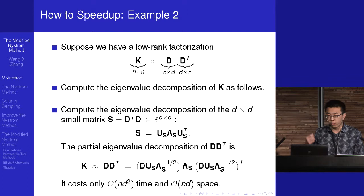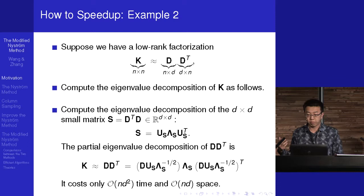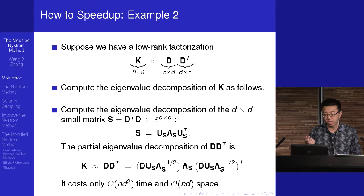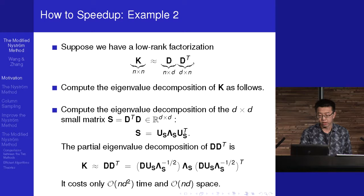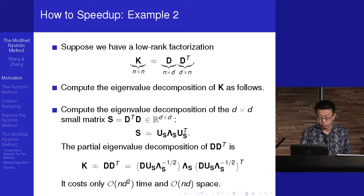With the low-rank factorization at hand, the eigenvalue decomposition can be approximately solved as follows. We first compute the product of D-transpose times D, which is a small matrix, denoted by S. We compute the eigenvalue decomposition of S. Then the partial eigenvalue decomposition of K is approximated accordingly. So it's also very time and space efficient.